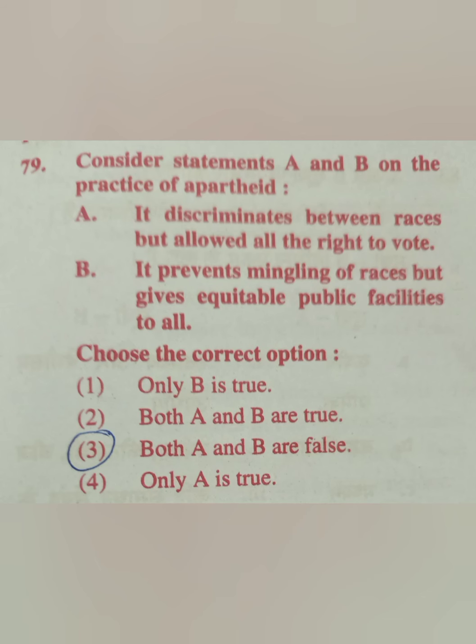Question 79: Consider statements A and B on the practice of apartheid. Statement A: It discriminates between races but allows all the right to vote. Statement B: It prevents mingling of races but gives equitable public facilities to all. The correct answer is option 3 — both A and B are false.